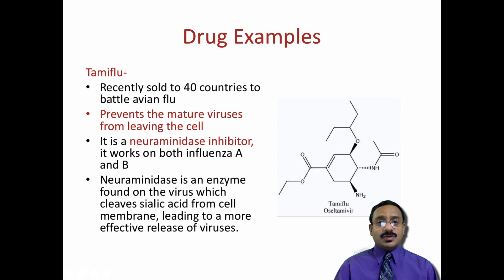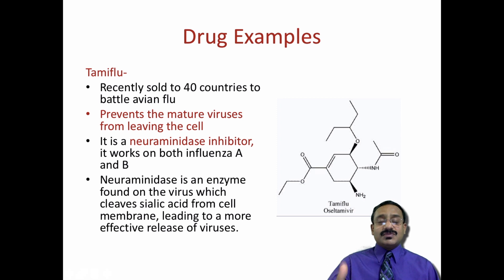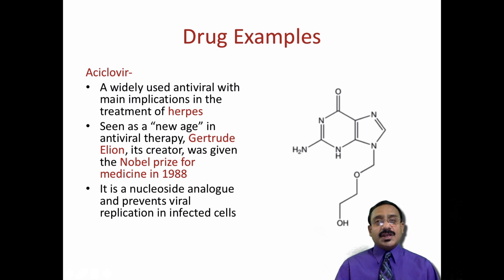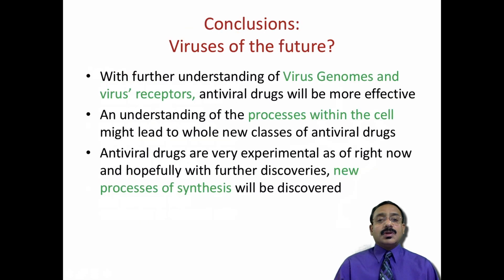Tamiflu is a neuraminidase inhibitor that prevents mature viruses from being released. Neuraminidase inhibitors work at two points: during viral entry and during exit. The neuraminidase enzyme, found on the virus, cleaves sialic acid during initial attachment to the host. Acyclovir, used for herpes infections, earned its creator the Nobel Prize in 1988. It is a nucleoside analog that mimics the nucleoside and fits into replication, halting further synthesis.